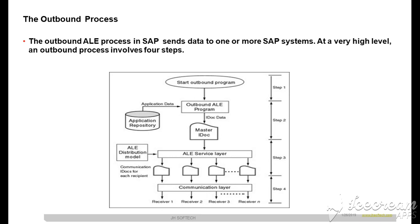The outbound process starts with the triggering of the outbound program. Let's assume we have a simple ABAP program which is executed either through a session or through direct execution. When you execute the program, the outbound program is triggered. It has an internal table filled with data coming from the database tables in the application repository, using a SELECT statement.